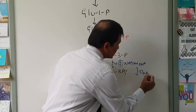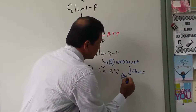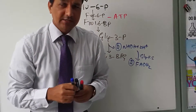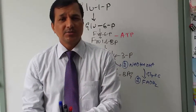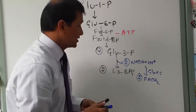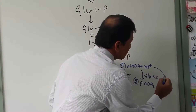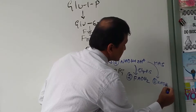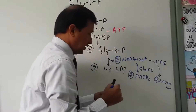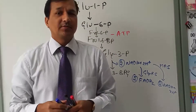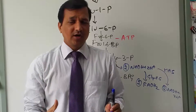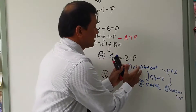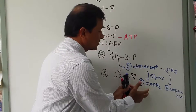If the glycerol phosphate shuttle mechanism is used, you get 2 FADH₂ in the mitochondria. If the cell uses the malate-aspartate shuttle mechanism, the NADH + H⁺ in the cytoplasm is transported into the mitochondria as NADH + H⁺. By default, most cells use the glycerol phosphate shuttle mechanism, transporting cytoplasmic NADH + H⁺ into the mitochondria as FADH₂.